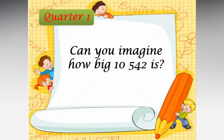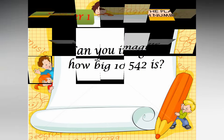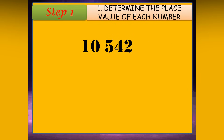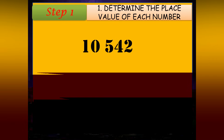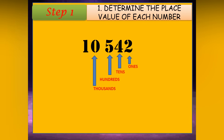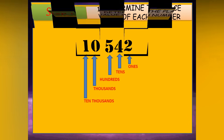Let's try to visualize. Step 1: Determine the place value of each number. The place values are: 1s, 10s, 100s, 1,000s, and 10,000s.